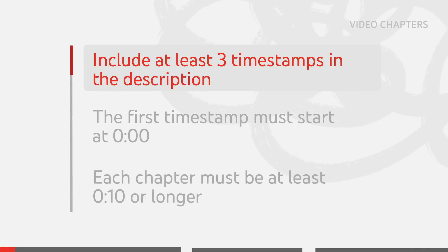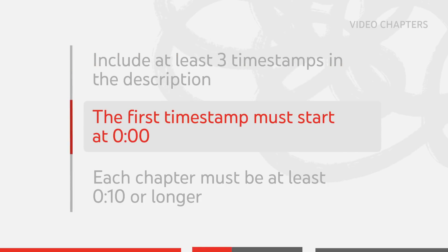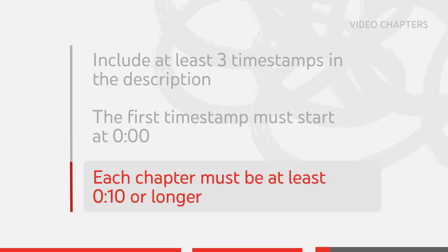Here's what you need to do if you want video chapters to show for your video: 1. Include at least 3 timestamps or chapters in your video description. 2. The first timestamp needs to start at 0 seconds. And 3. Each chapter needs to be 10 seconds or longer.